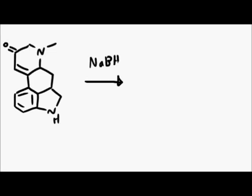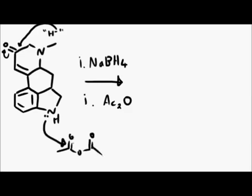Next, sodium borohydride is used, and acetic anhydride. The first reagent reduces the ketone to an alcohol, and the second protects the nitrogen against the next reaction steps.